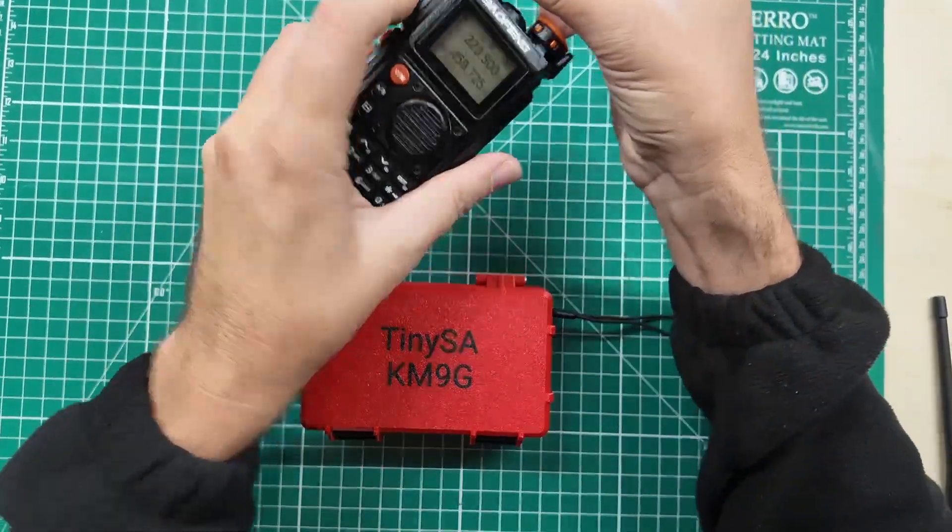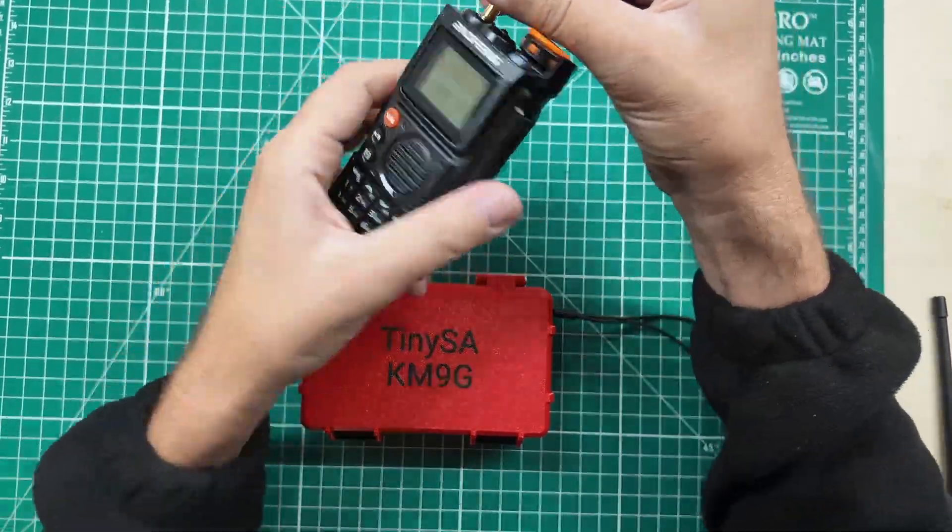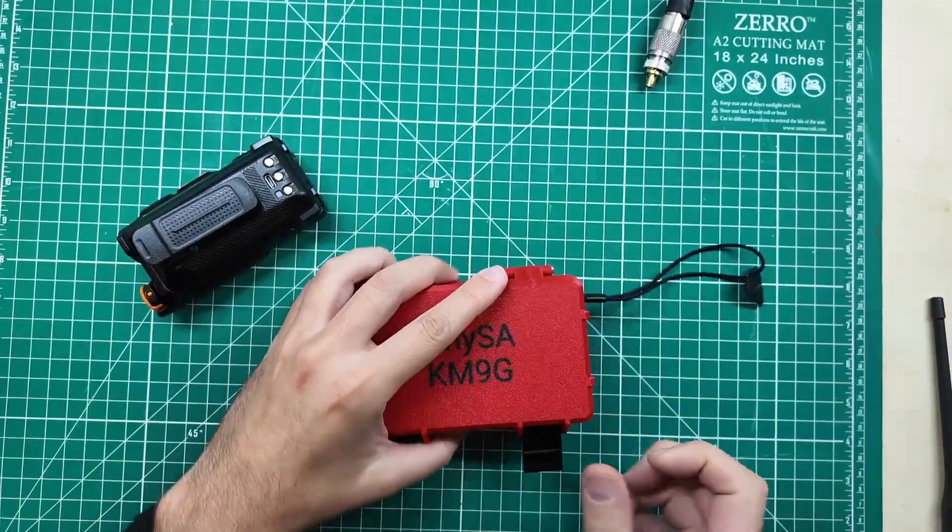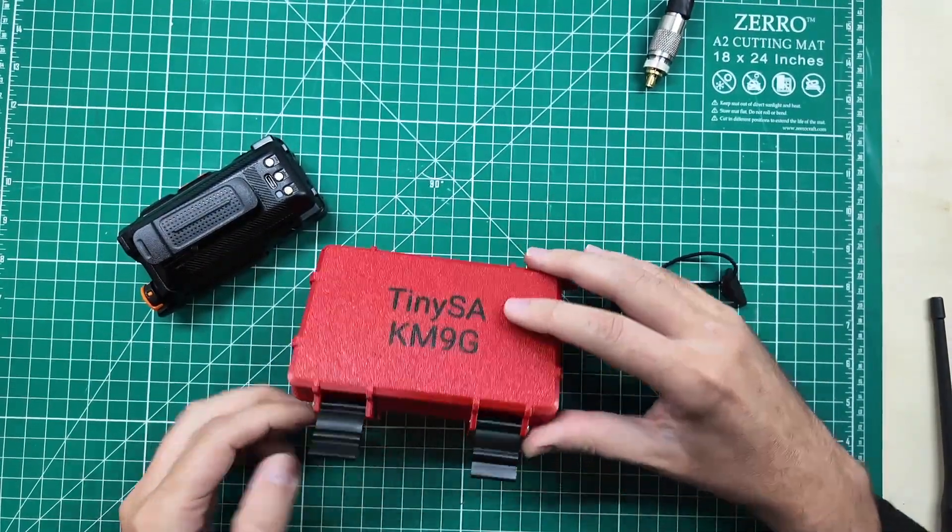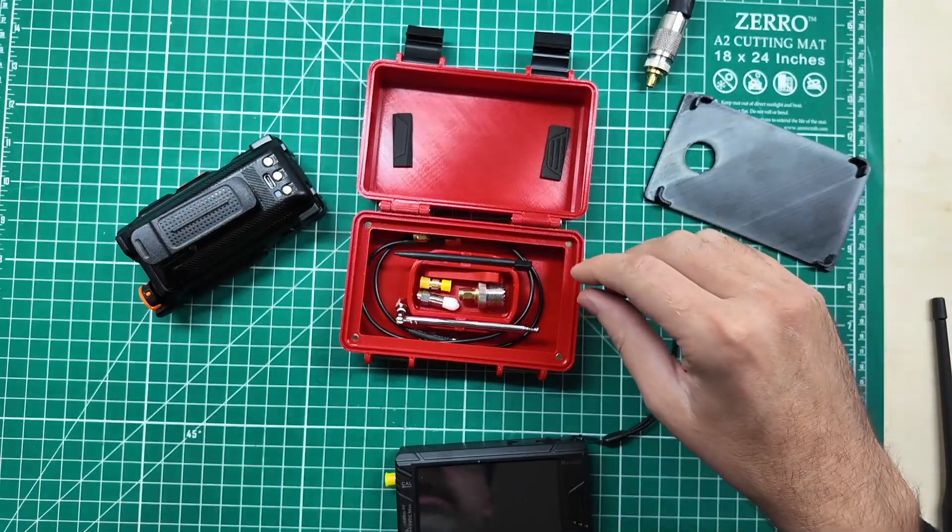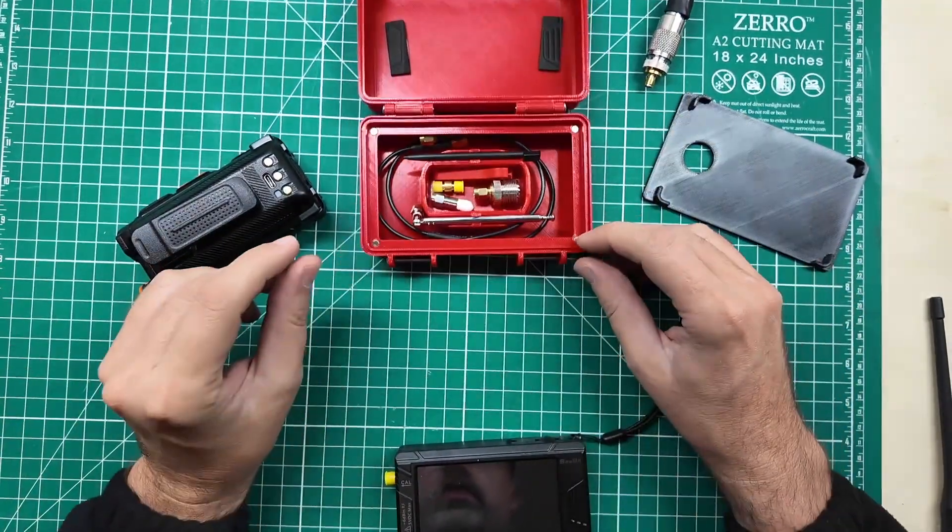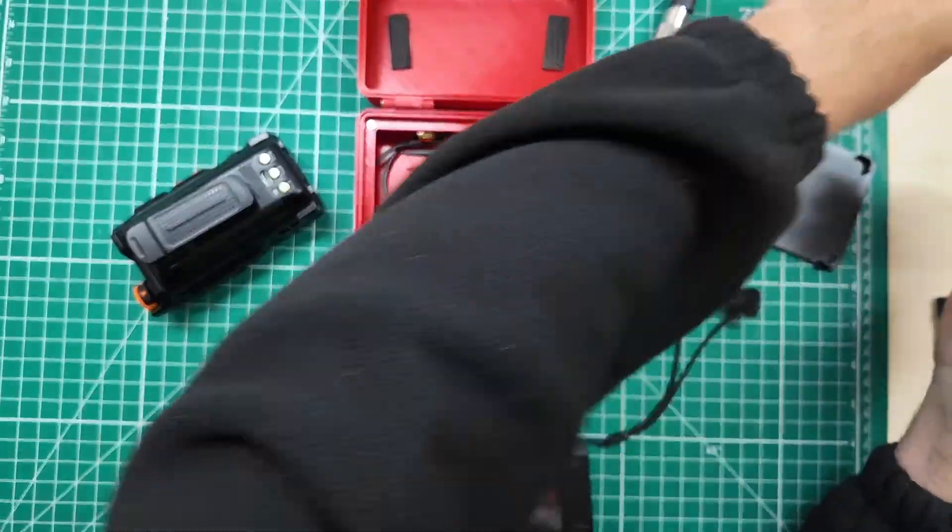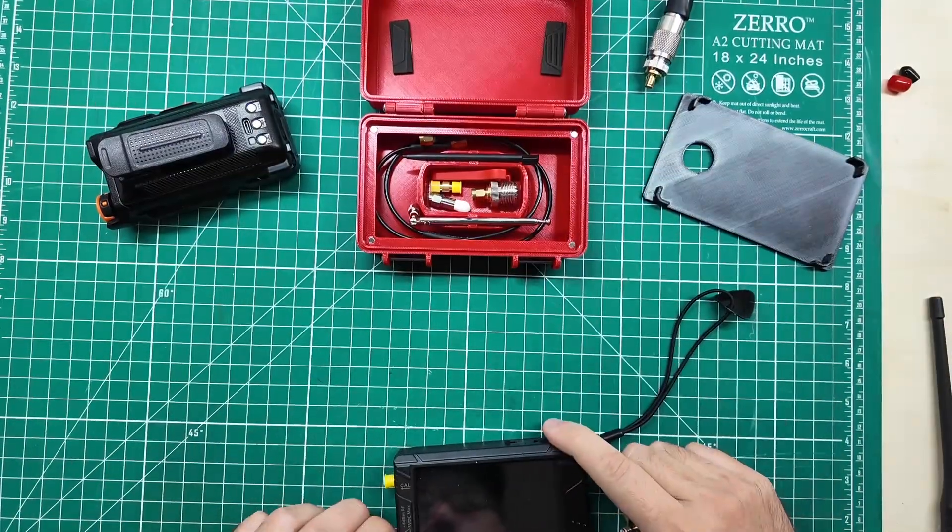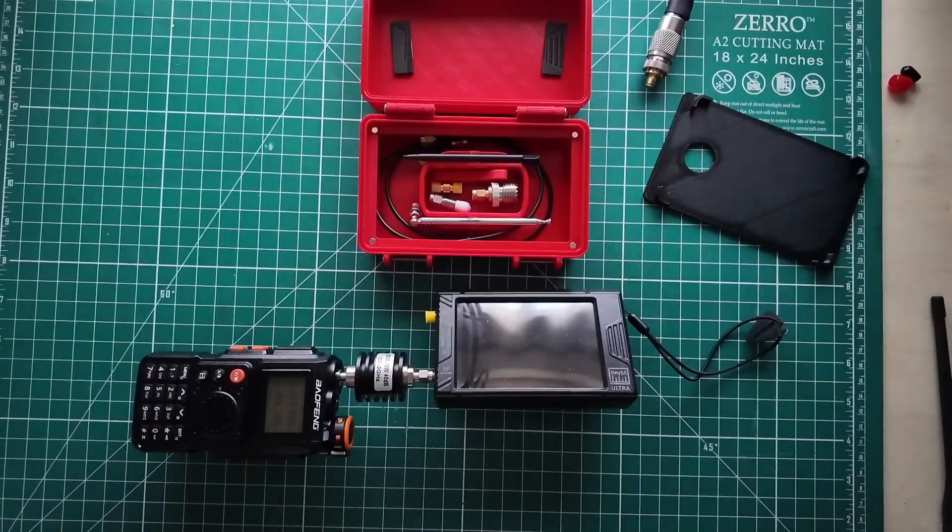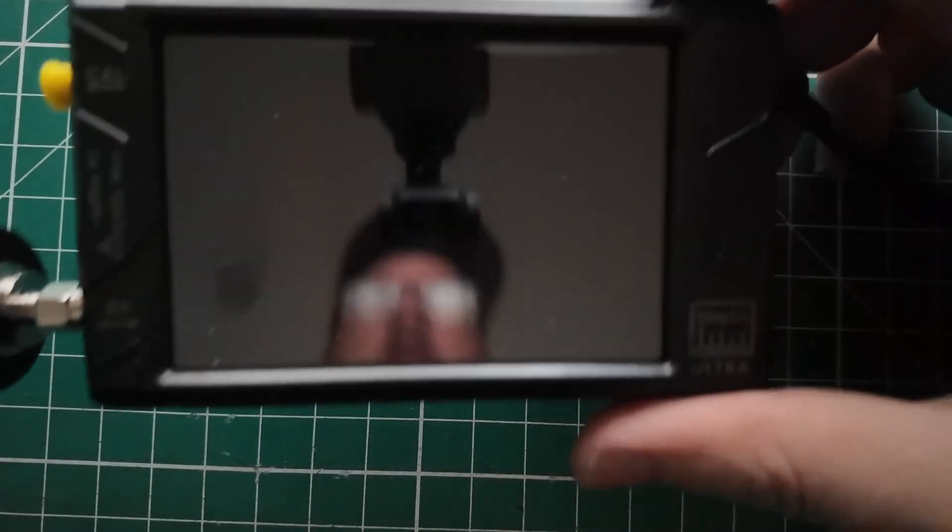All right, the moment you have all been waiting for, it is TinySA time. We're going to figure out how clean this radio is that I just dropped in the dirt. This is a nice little 3D printed case that I have for my TinySA Ultra. There is one for the regular TinySA as well. And I need my attenuator. I need to use the attenuator so that you don't put too much power into the front end of your TinySA. That would not be a good day for you. Radio in. Dark mode on. Let's zoom in on the screen.